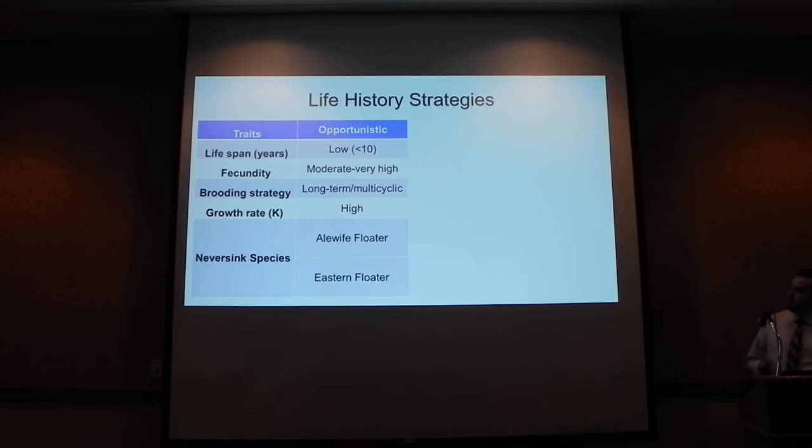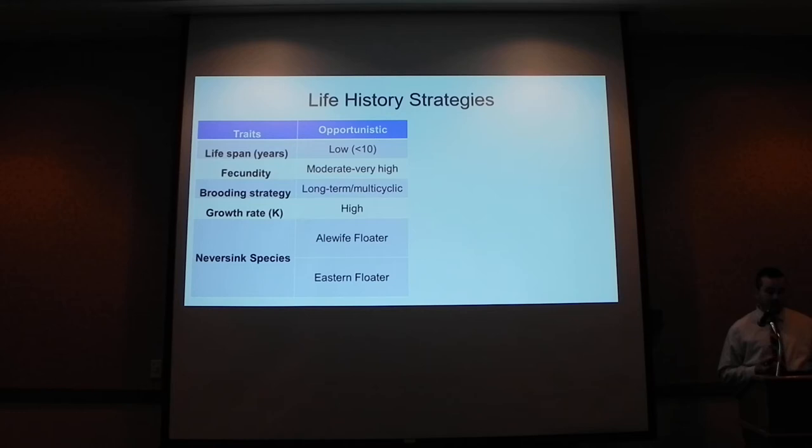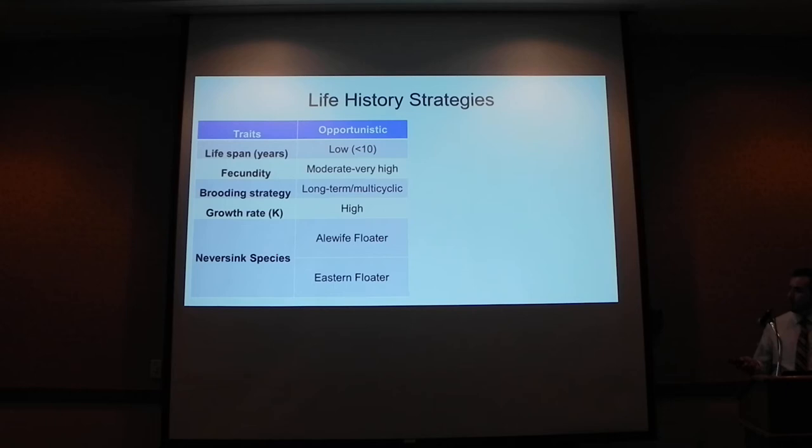For the mussel life history strategies: opportunistic species are really short-lived mussels with high fecundity and a high growth rate. They use a long-term brooding strategy, spawning in the late summer and fall and holding on to the glochidia into the spring before releasing them. The Neversink has two opportunistic species: the slippershell floater and the eastern floater.